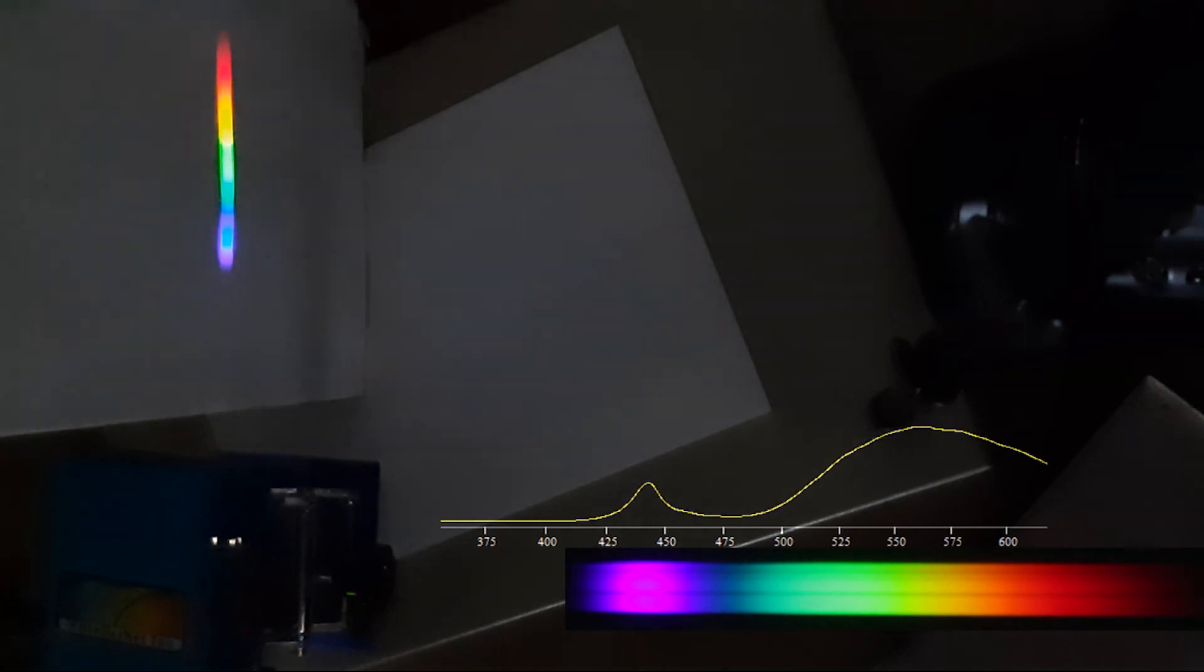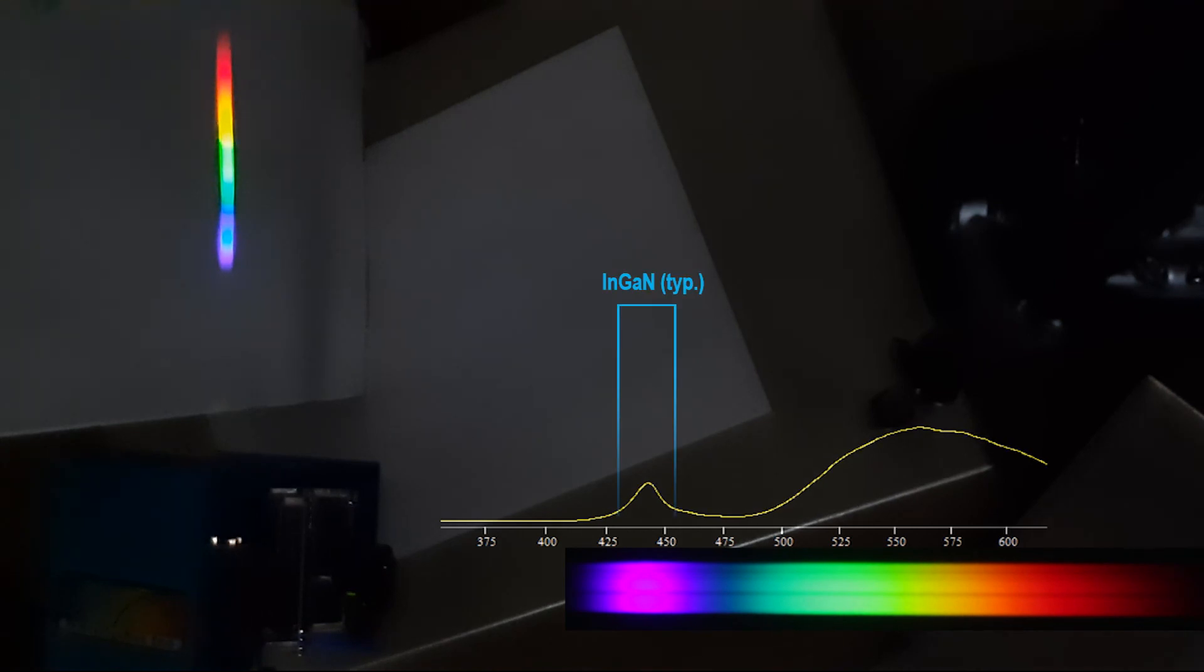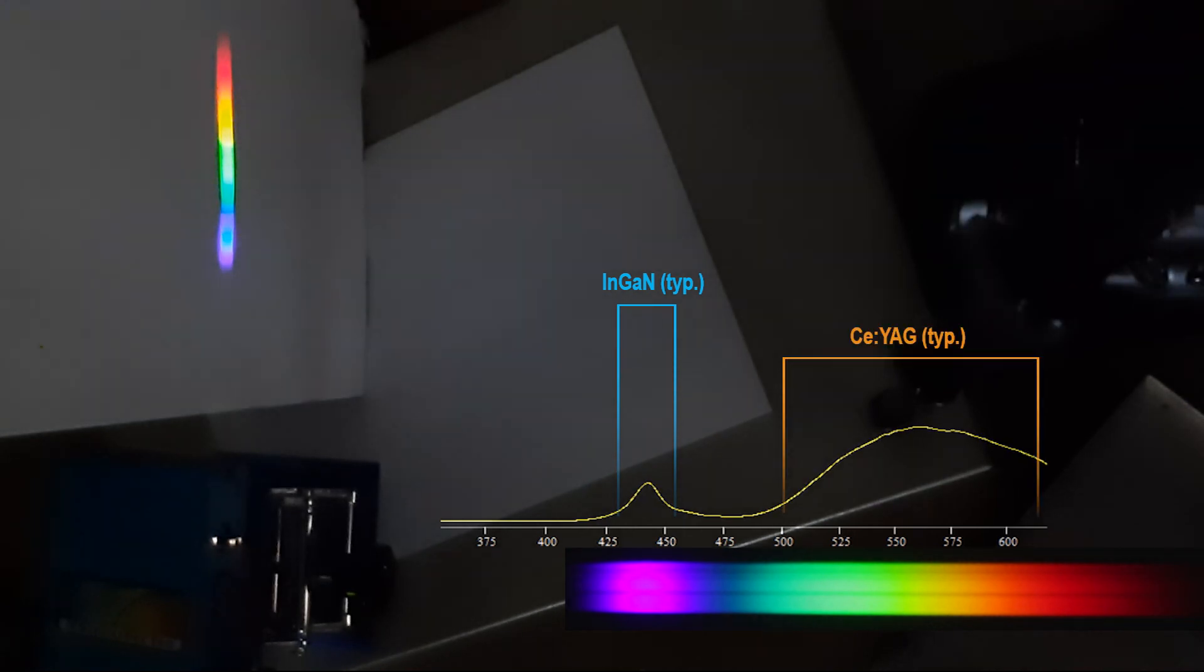In case of LED, indium gallium nitride is used to provide excitation for the phosphors. And typically cerium compounds are used as phosphors, which emit broadband yellow light.